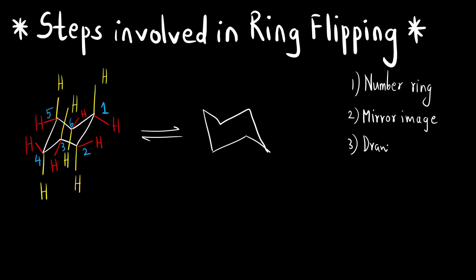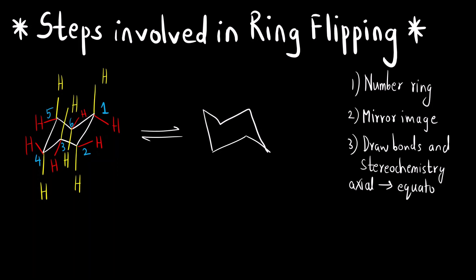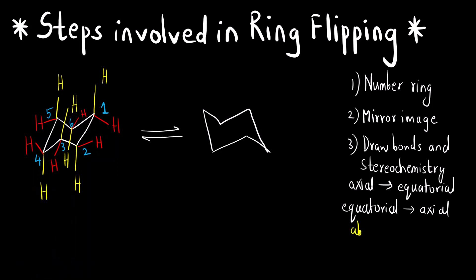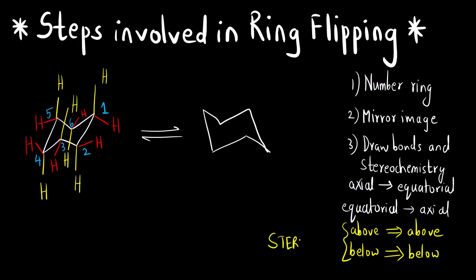Step three is to draw the bonds and the stereochemistry. In the ring flip structure, the groups that are axial become equatorial, and the groups that are at the equatorial position go to the axial position. For stereochemistry: groups that are above the plane will remain above the plane, and groups that are below the plane will remain below the plane of the ring.